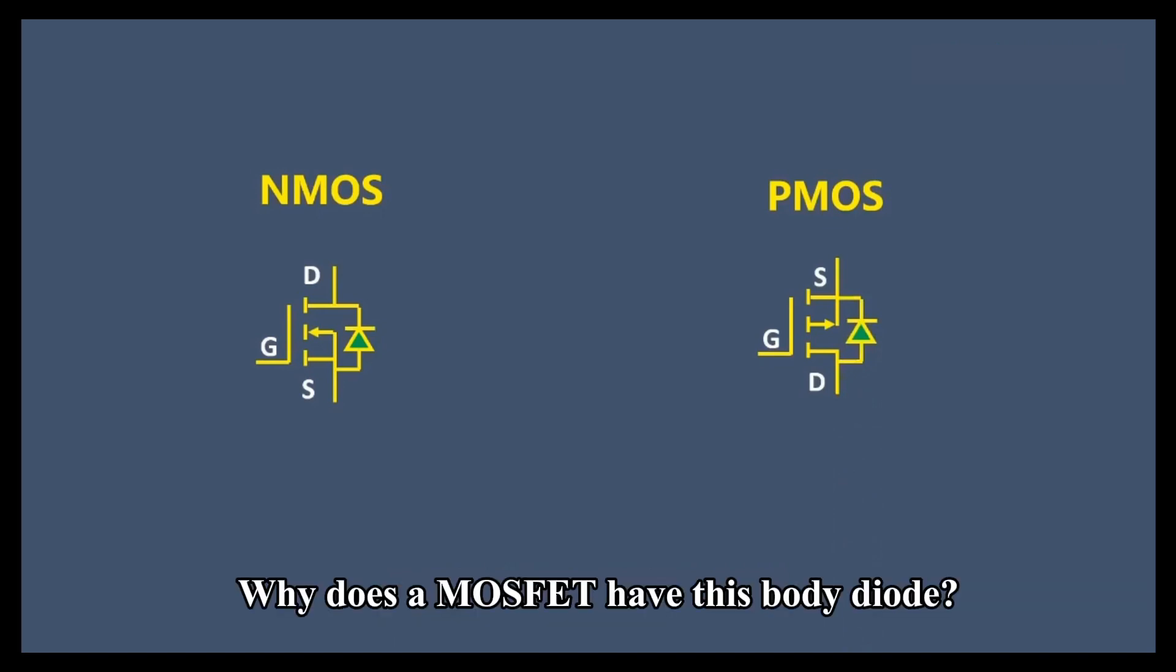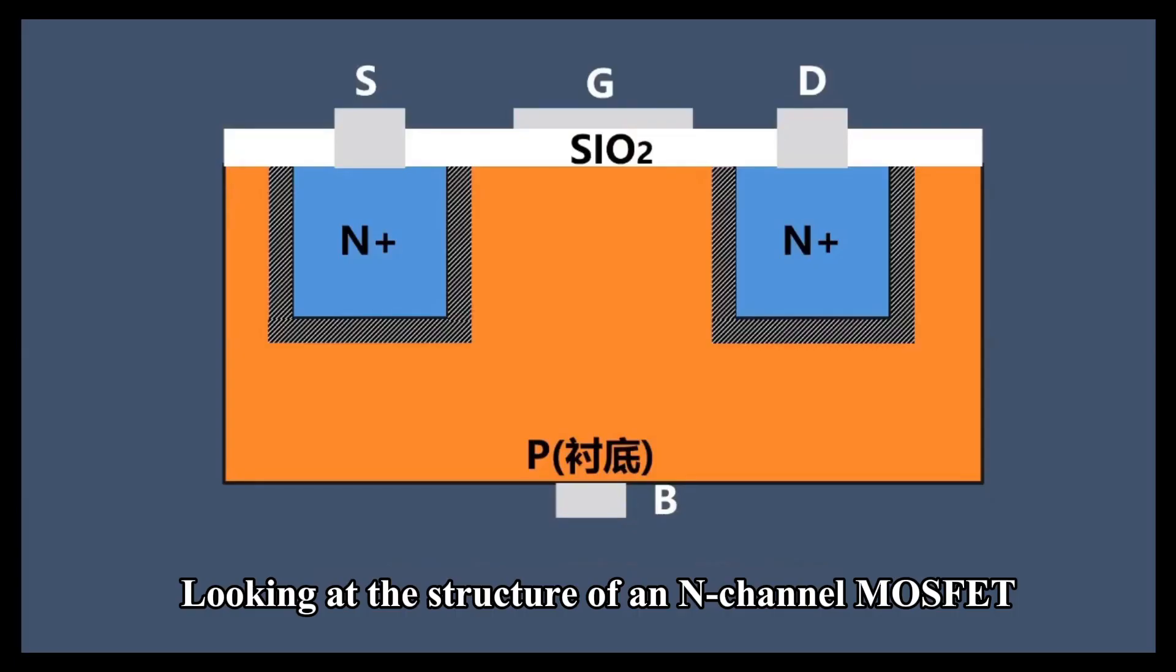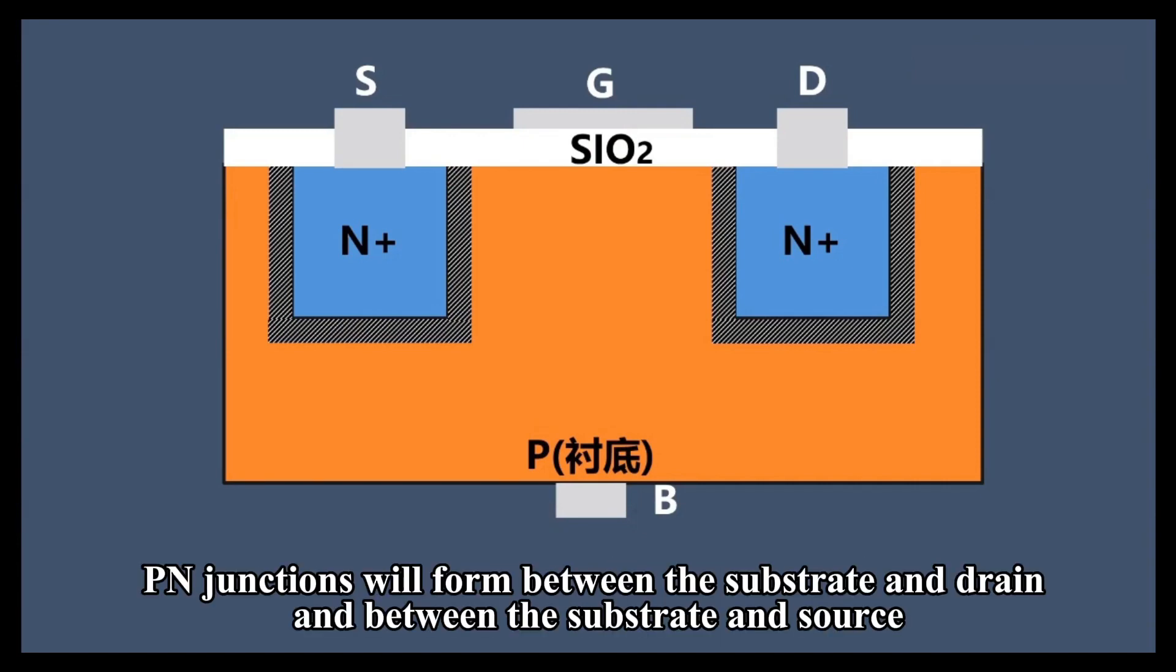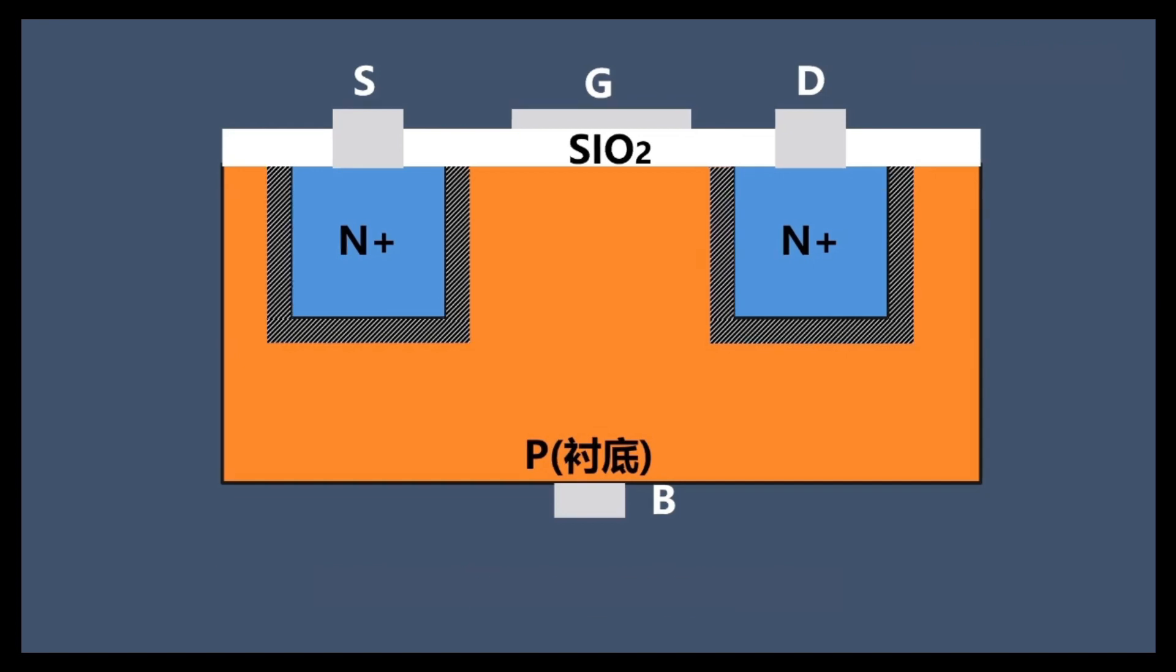Why does a MOSFET have this body diode? Looking at the structure of an N-channel MOSFET, the source and drain are heavily doped N-regions that are made on a P-type substrate. Therefore, P-N junctions will form between the substrate and drain and between the substrate and source, forming diodes.